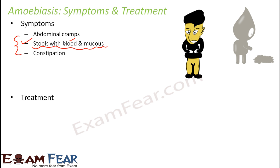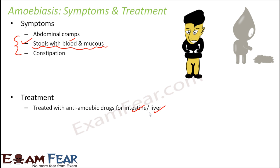Treatment involves anti-amoebic drugs for the intestine and liver, since these are the organs primarily impacted during amoebic dysentery. Good care must also be taken to ensure clean water, clean food, and personal hygiene.